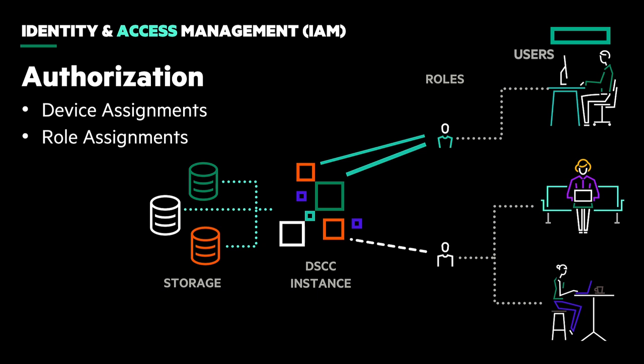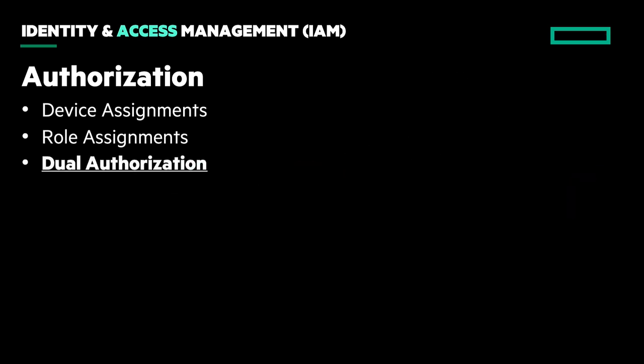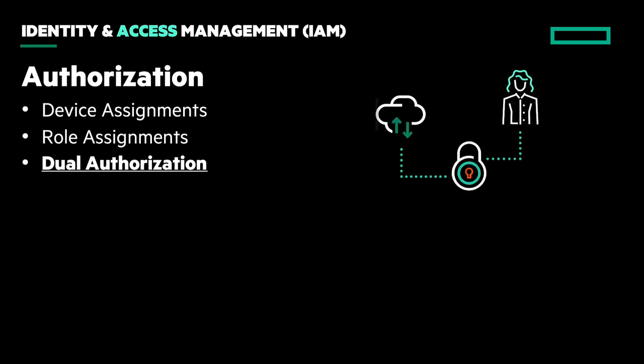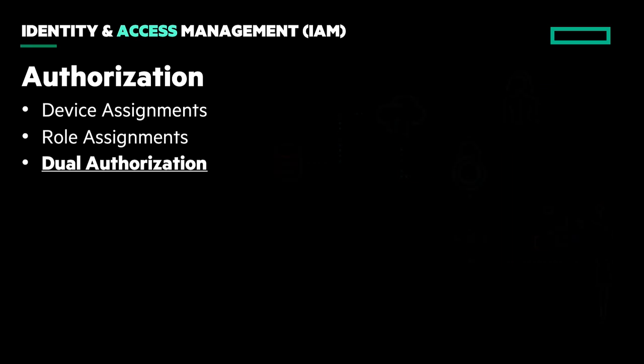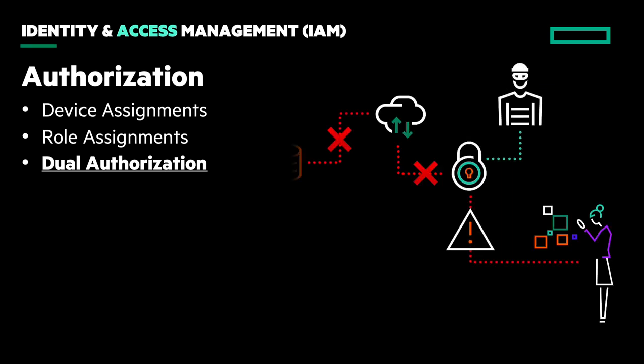And if those security features haven't secured your attention yet, you'll want to hear about dual authorization. This feature can be enabled for users to submit operations that require a second user to approve or deny. Without approval within a time limit, the pending operations will expire and be canceled automatically. Dual authorization will help you protect your data against ransomware attacks and insider attacks.